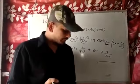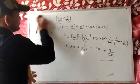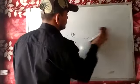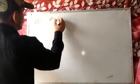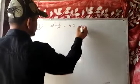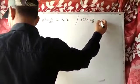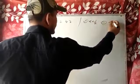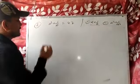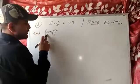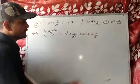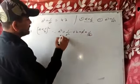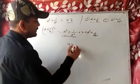Question number 4 is very easy — I hope you can do it. Now question number 2: if a squared plus 1 by a squared is equal to 47, you have to find a plus 1 by a and a cube plus 1 by a cube. First I will find a plus 1 by a whole square using a plus b whole square equals a squared plus b squared plus 2ab.